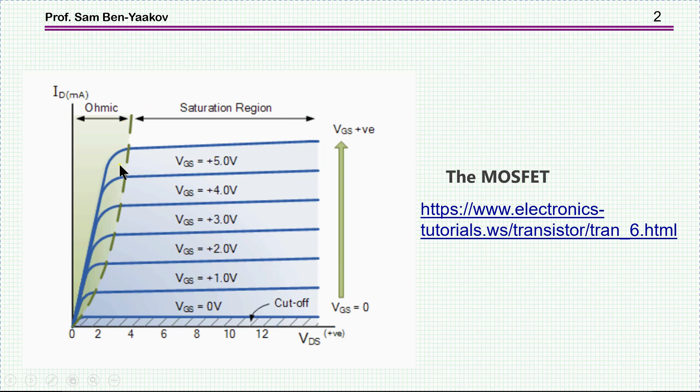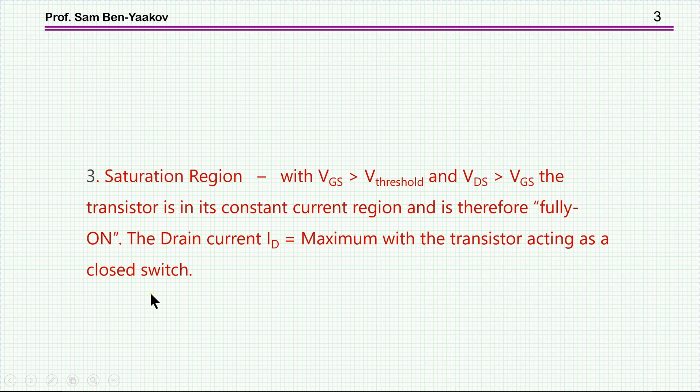And then it states that the saturation region with VGS larger than V threshold and VDS larger than VGS, the transistor is in the constant current region and is therefore fully on. The drain current ID is equal to maximum with the transistor acting as a closed switch.